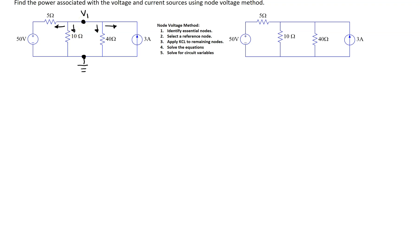Looking at the branch current through the 10 ohm resistor, we can use Ohm's law to write the term for this branch current. Following the direction of this branch current, voltage at this end minus voltage at this end divided by resistance gives V1 minus 0, because the voltage at the reference node is assumed to be 0, divided by 10. For the next branch current, following the assumed direction, the end where the current enters is higher potential, so this branch current is V1 minus 0 over 40.